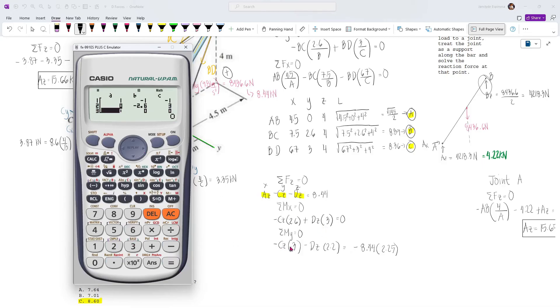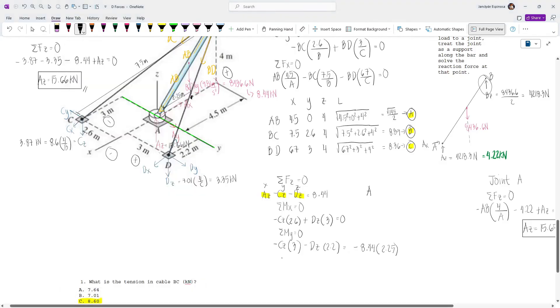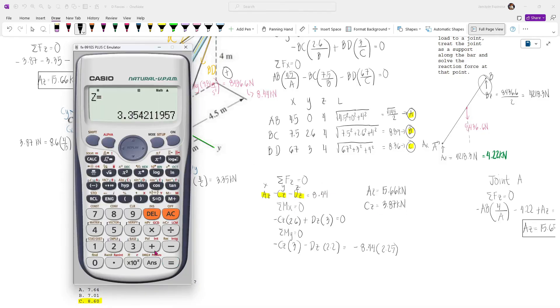Finally we have minus 3 for CZ which is right here and then minus 2.2 and then for the constant we have minus 8.44 multiplied by 2.25. Press equals, we can now solve AZ, CZ and DZ. We're gonna get AZ equal to 15.66 KN and then CZ is 3.87 and then we have DZ equal to 3.35 KN.